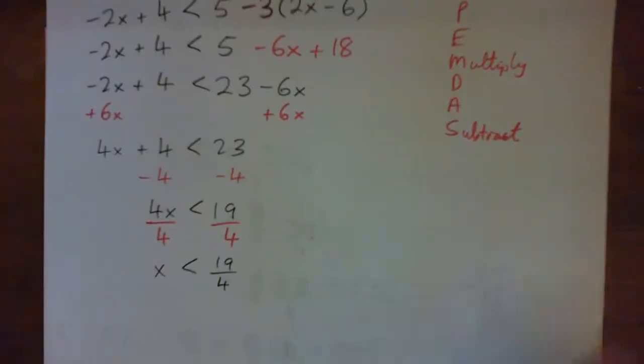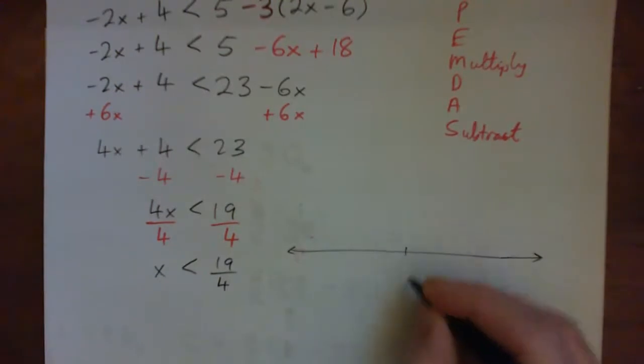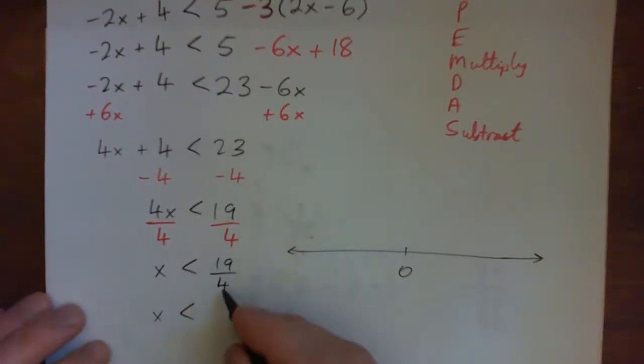So putting this on a number line, I would suggest putting that into like a decimal or a mixed number. Because like, where's 19 fourths on a number line? I have a hard time seeing that. So I'm going to put that at least into a mixed number. 4 into 16 goes 4 times remainder 3. Because 4 times 4 is 16. Right. So it's 4 and 3 quarters. Right.